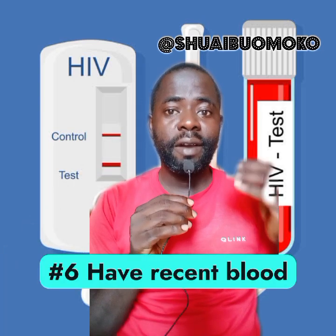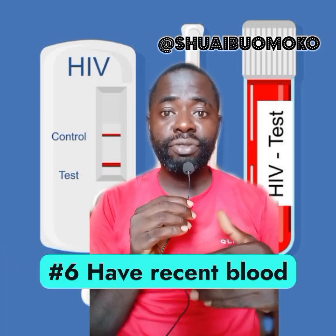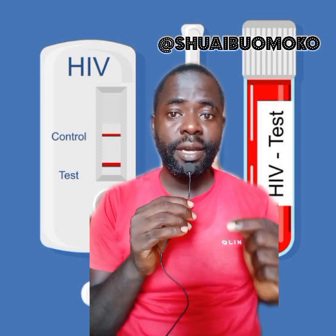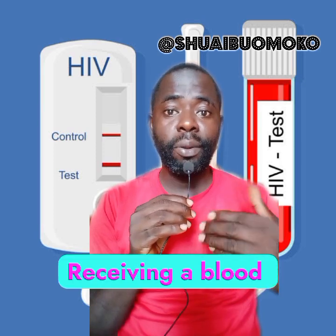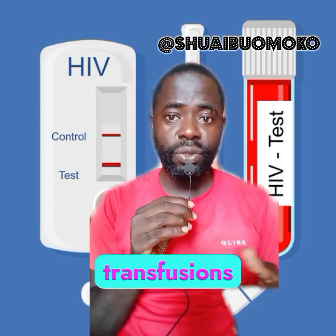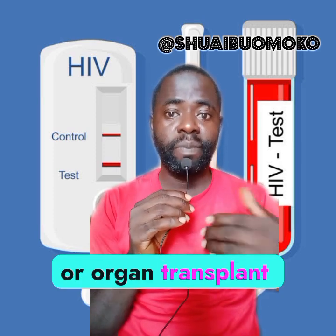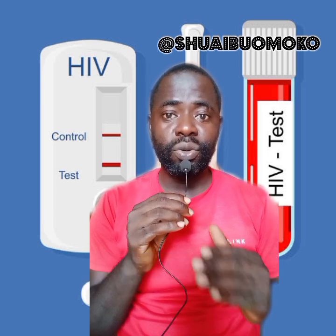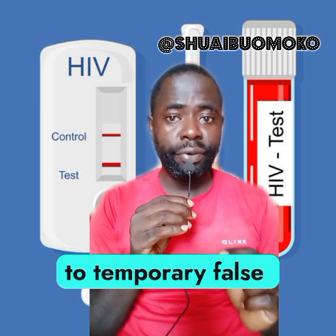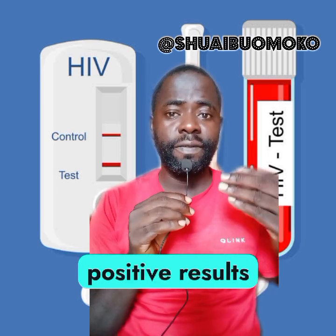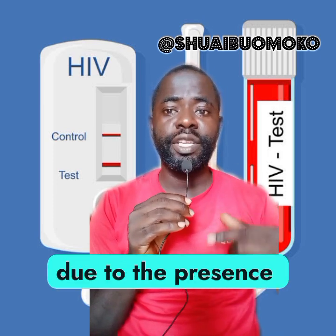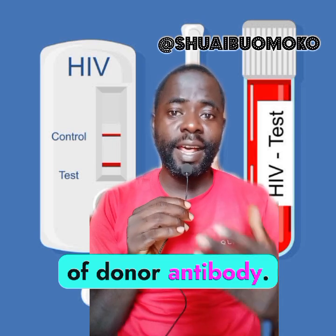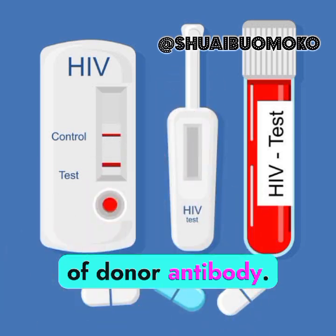Number six: recent blood transfusions or transplants. Receiving a blood transfusion or organ transplant can sometimes lead to a temporary false positive result due to the presence of donor antibodies.